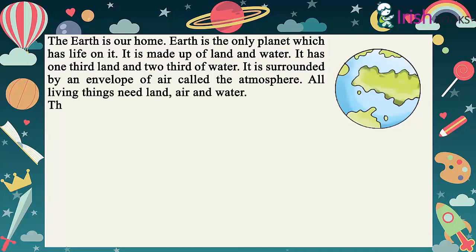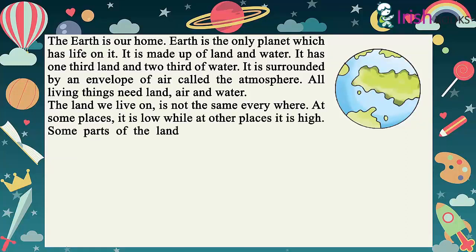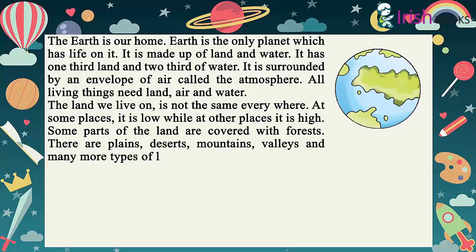The land we live on is not the same everywhere. At some places it is low while at other places it is high. Some parts of the land are covered with forests. There are plains, deserts, mountains, valleys and many more types of landforms on the earth.